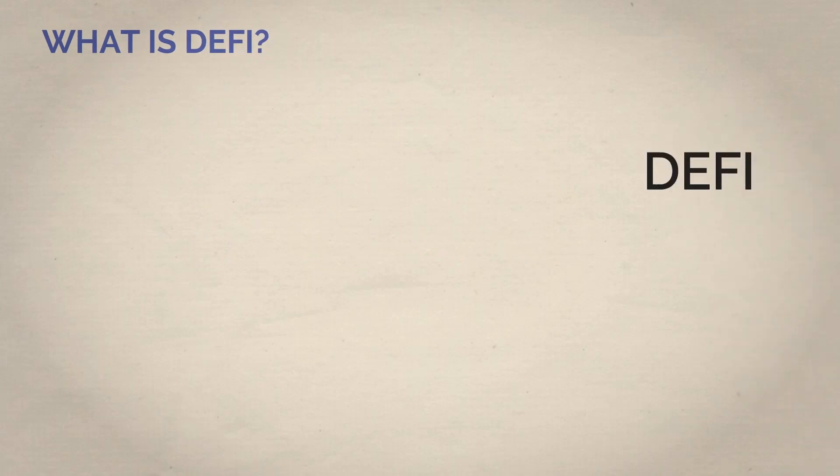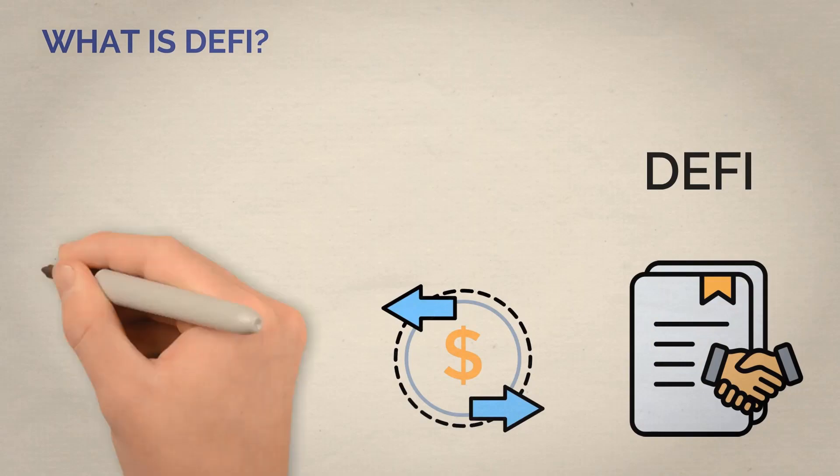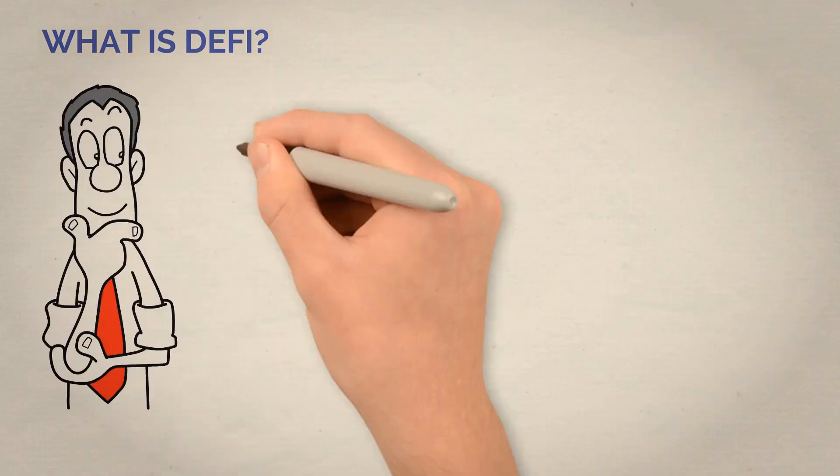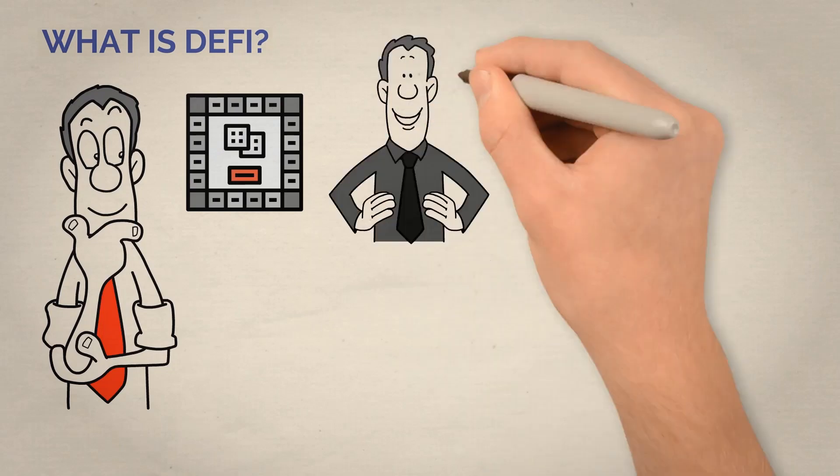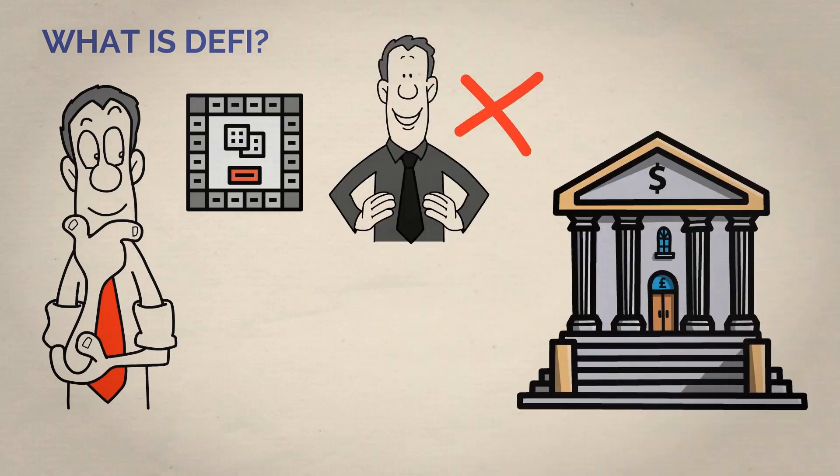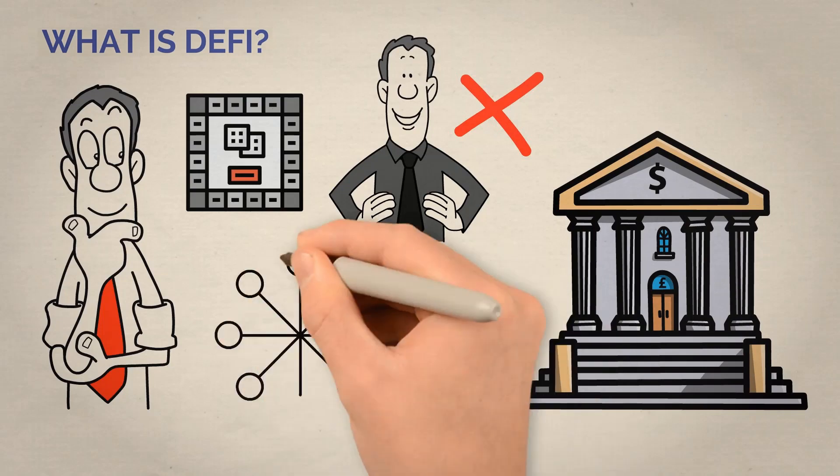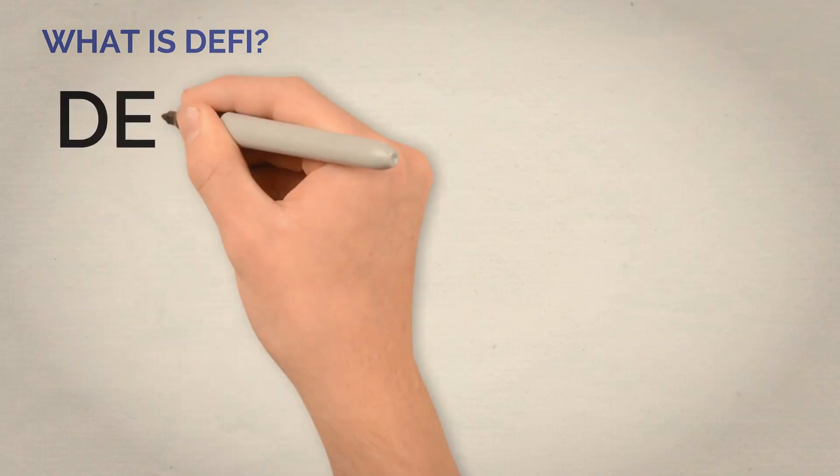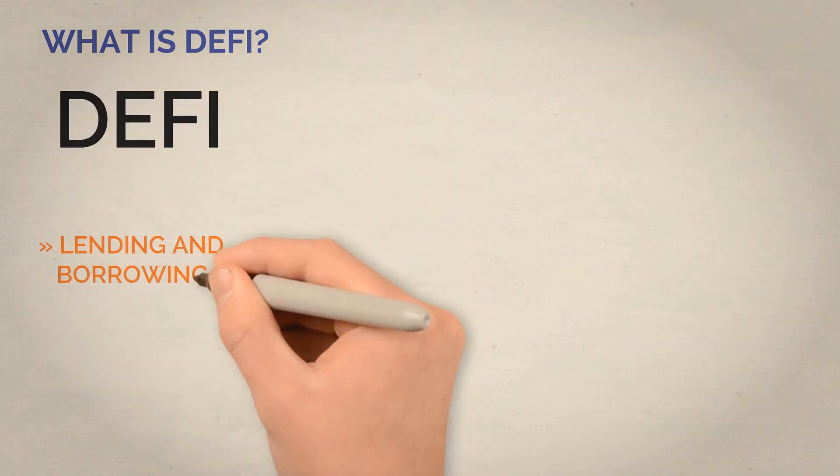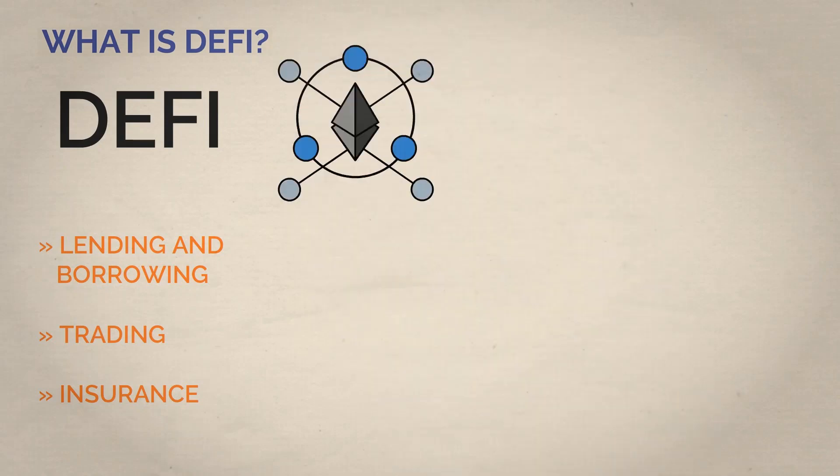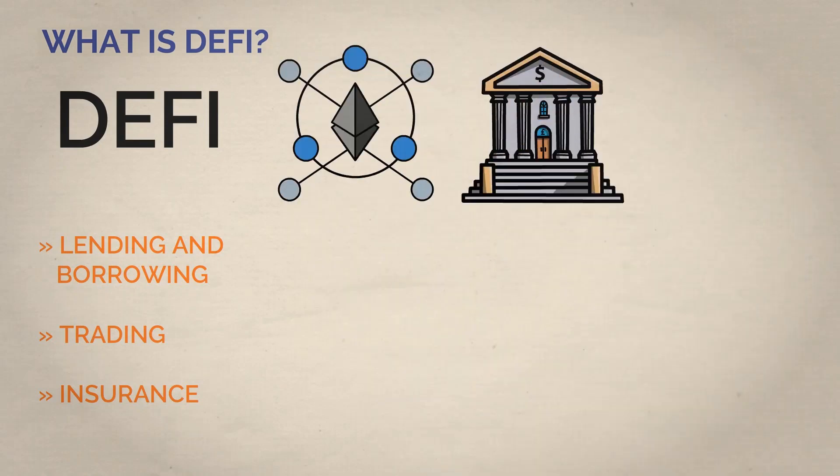Simply put, DeFi is the fancy word for doing financial transactions and agreements on the blockchain without the need for a traditional middleman. Think of it like this. Imagine you're playing a monopoly game, but one person isn't the banker. All the players control the money in the bank, and all have to agree when the money is distributed. That's kind of how DeFi works. DeFi allows for things like lending and borrowing, trading and insurance, all on the blockchain and without the need for traditional financial intermediaries such as banks.